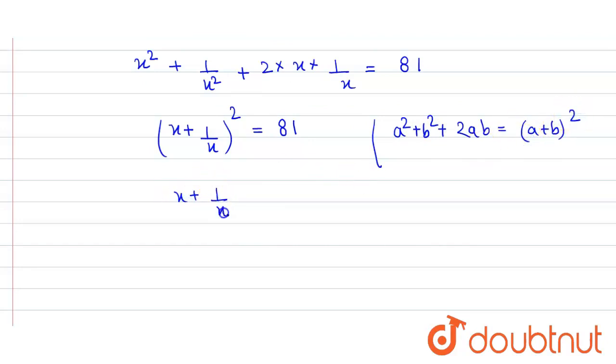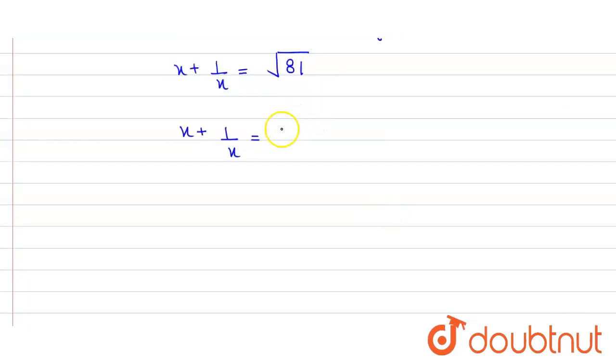So x + 1/x = √81. We get the value of x + 1/x = 9. That's our answer.